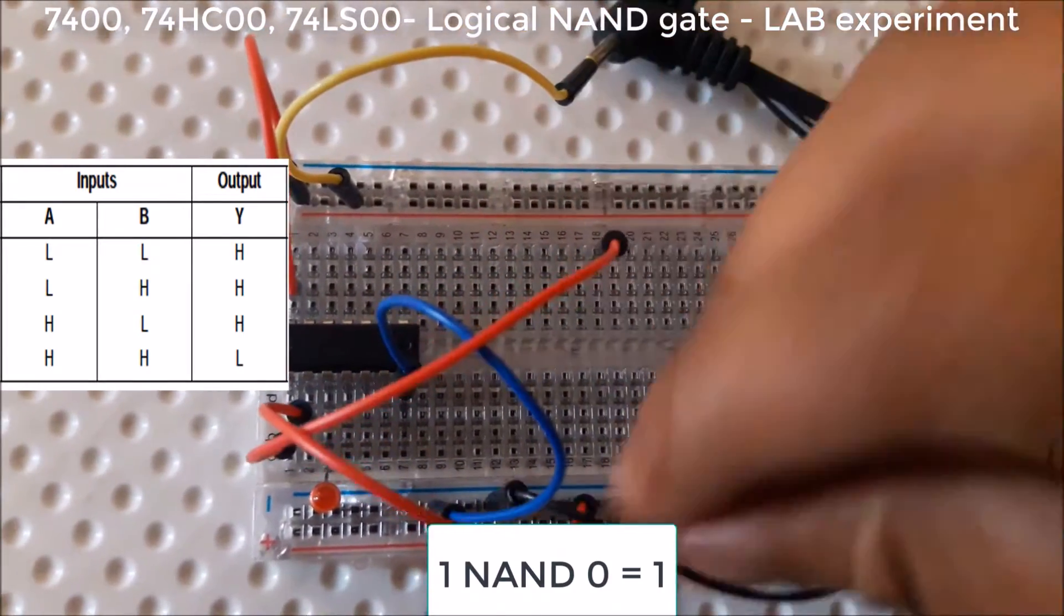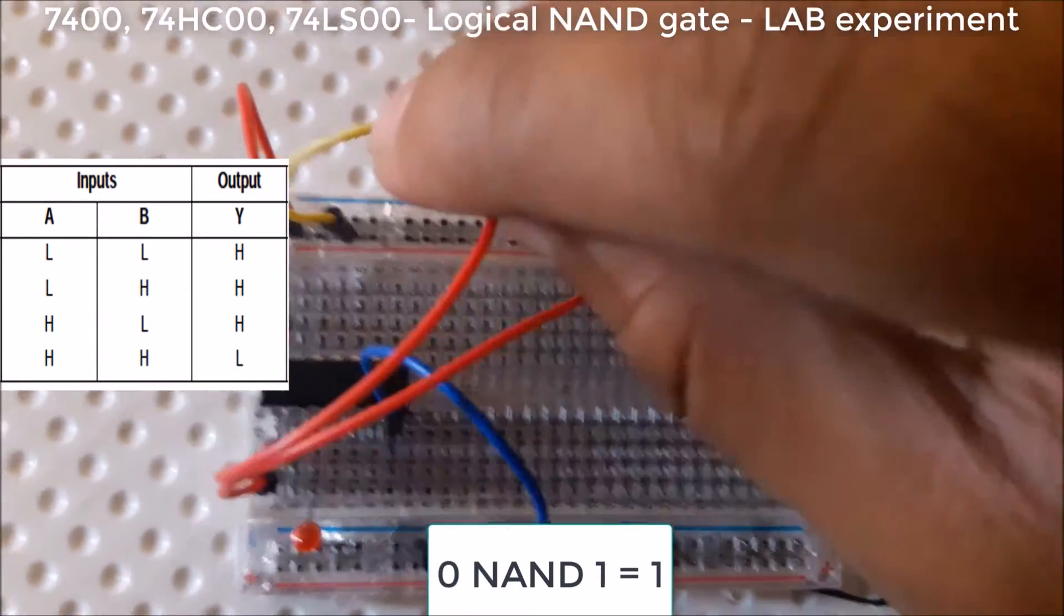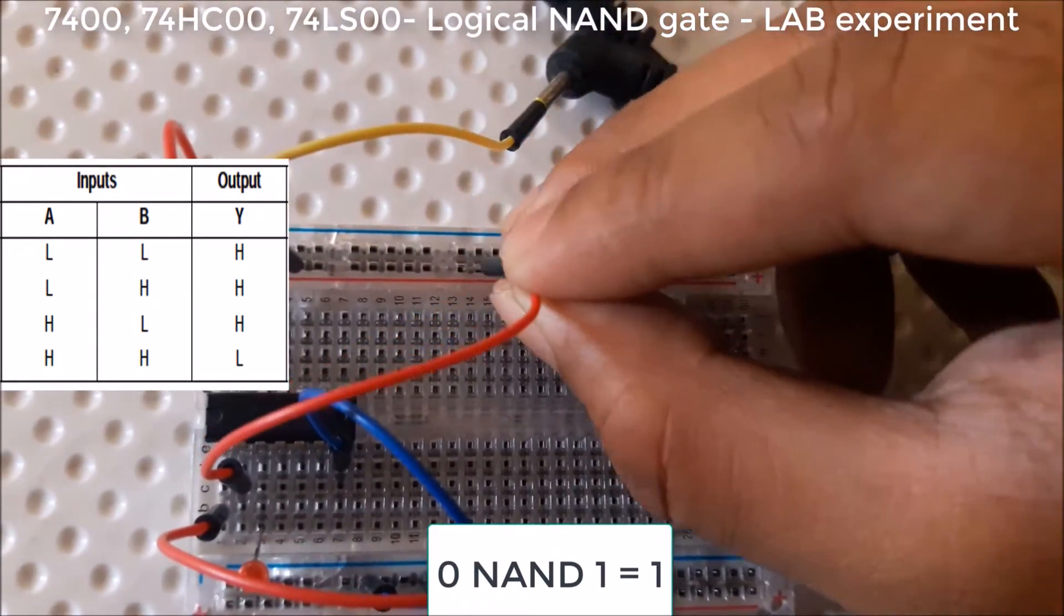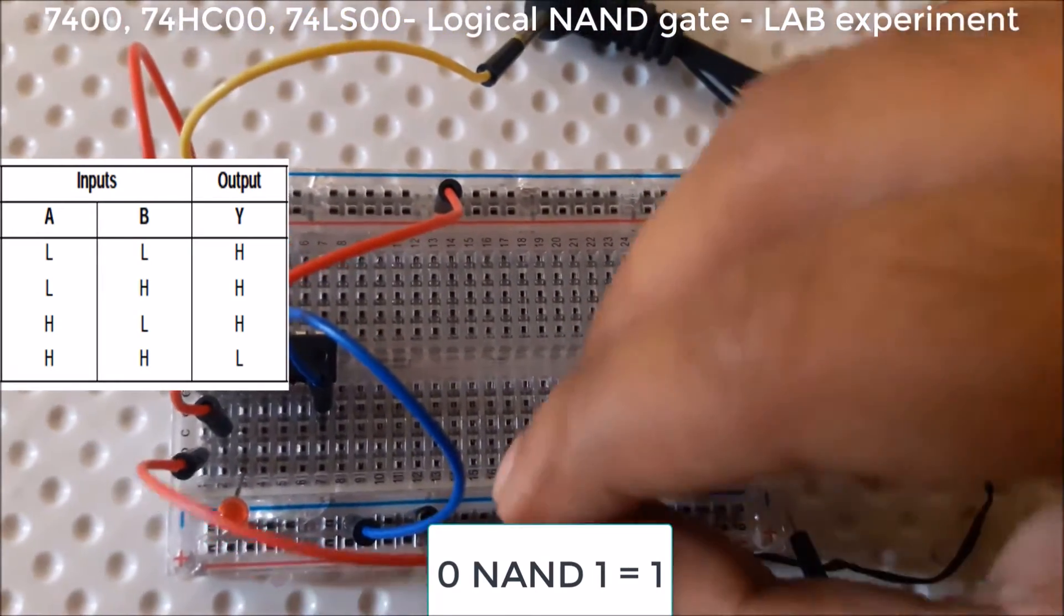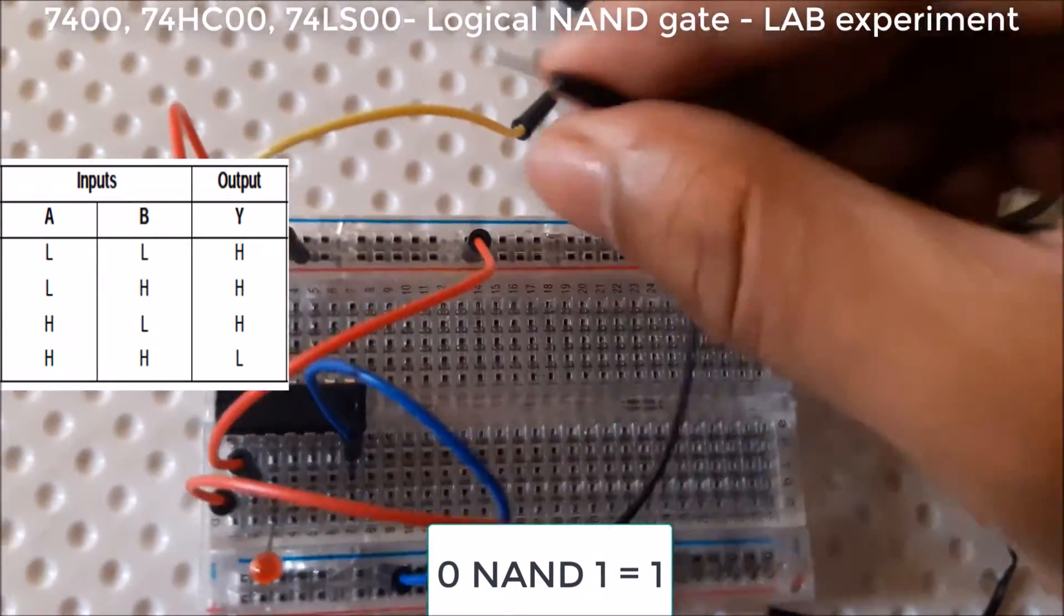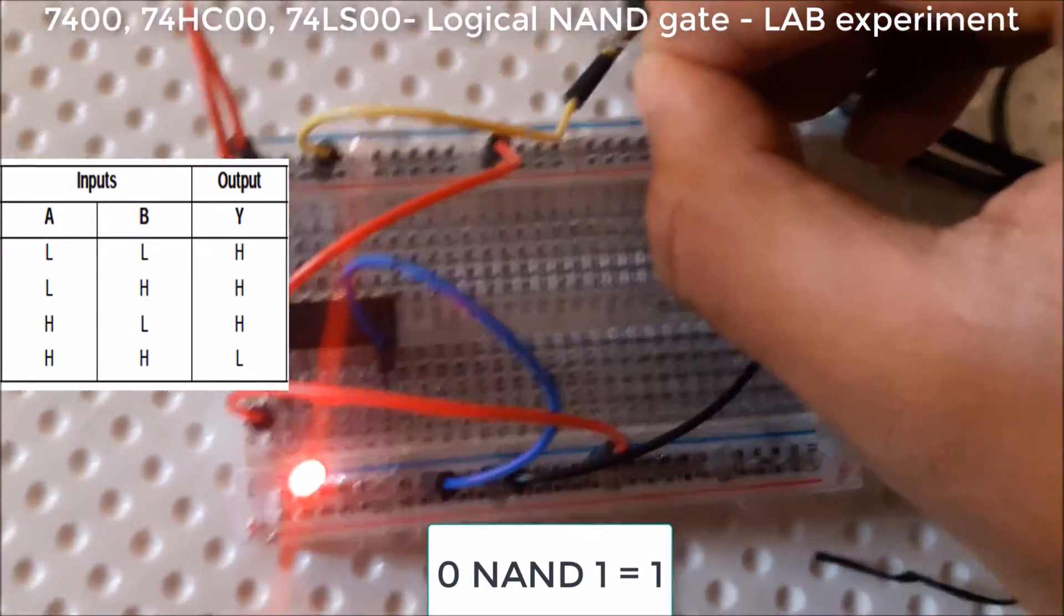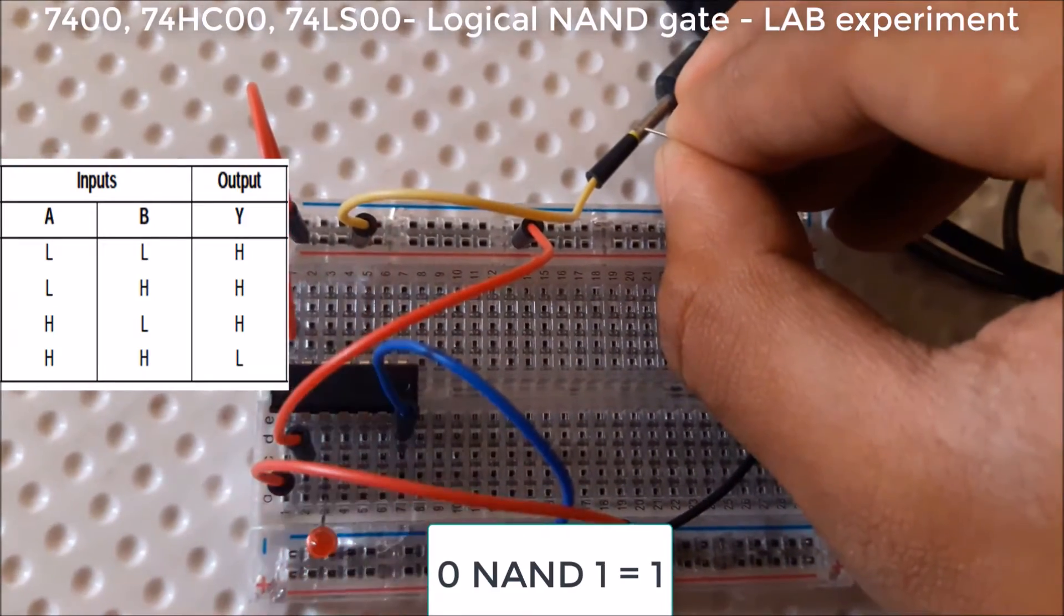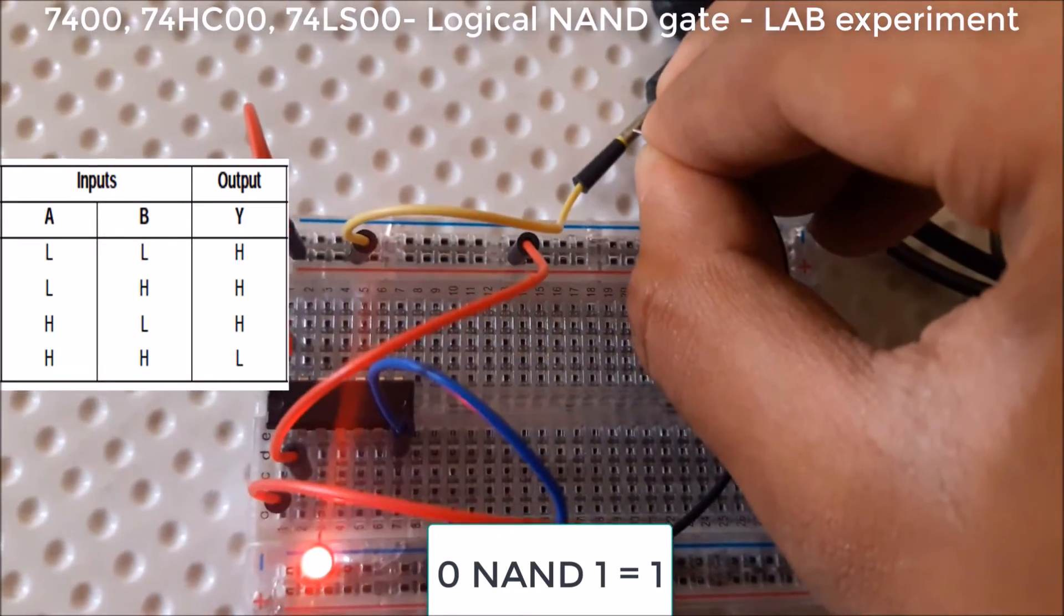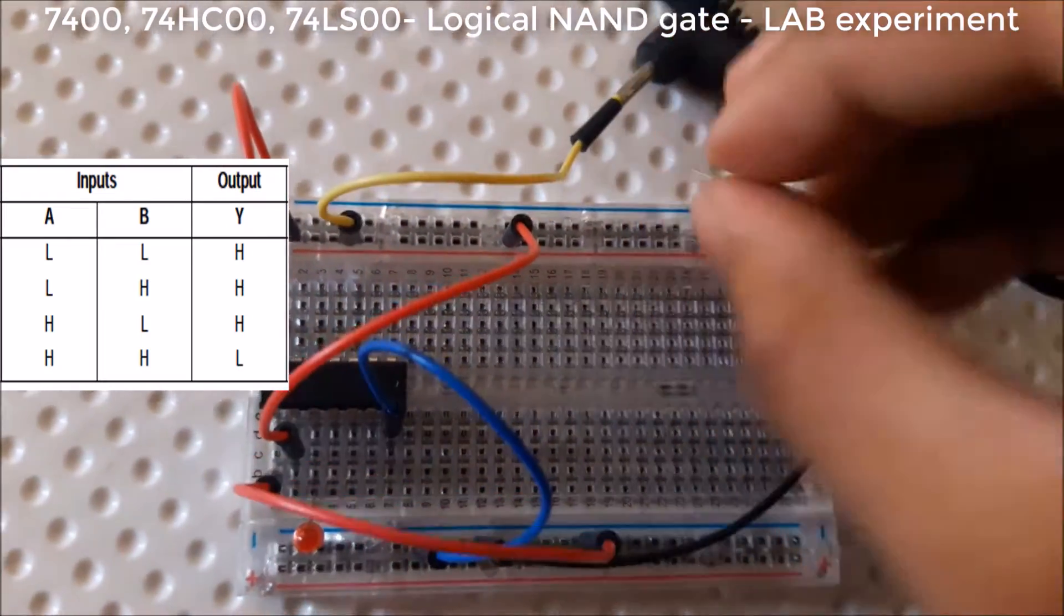Let's check the 0 and 1 condition. If we give 0 and 1, then the LED is also blinking. So 0 and 1 is giving 1, and 1 and 0 is giving 1, but 1 and 1 is giving 0.